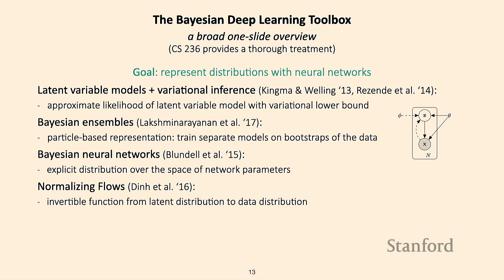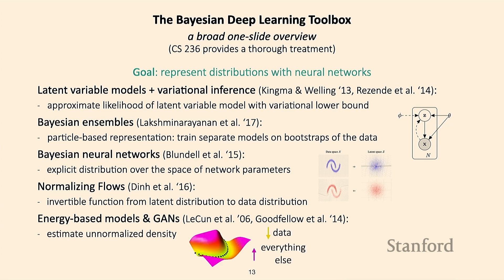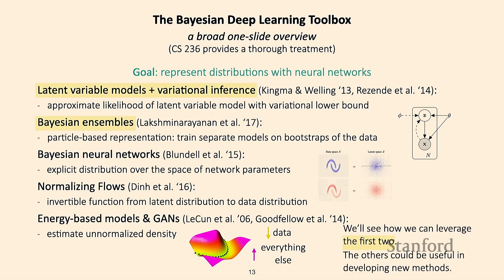There are also other distribution classes such as normalizing flows, energy-based models, and GANs. We're not going to talk about these today, and for the most part people haven't used these for Bayesian meta-learning, but these other ways of representing distributions could be useful for developing new Bayesian meta-learning algorithms.